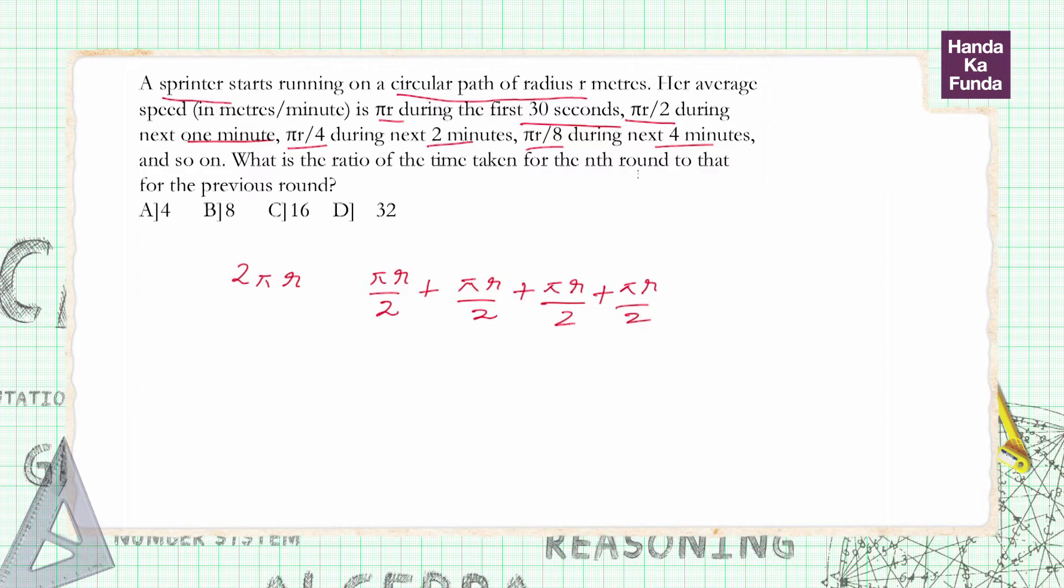So basically in every time gap mentioned here—30 seconds, 1 minute, 2 minutes, 4 minutes—she covers πr/2. So in one particular round, or if we just look at the first round, how much time will she take?